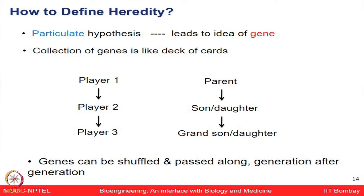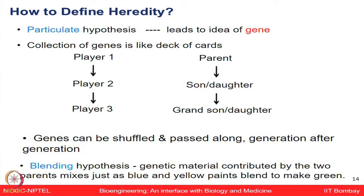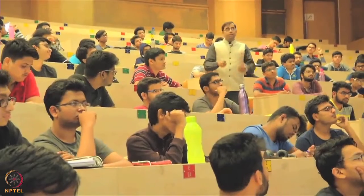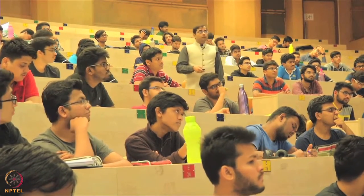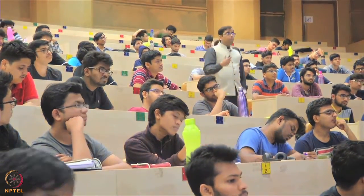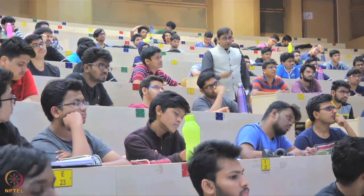The particulate hypothesis, where genes can be shuffled and passed along from one generation to the next, became more popular. The blending hypothesis — where genes mix like blue and yellow paint to make green — is not as accepted, but both were proposed to explain hereditary.